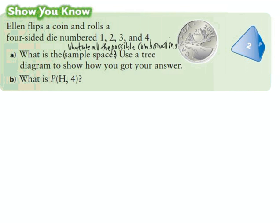We're asked to create a tree diagram to find all the combinations. The first thing we do is put the first event, which will be the coin. When you flip the coin you have two possibilities — technically either heads or tails.